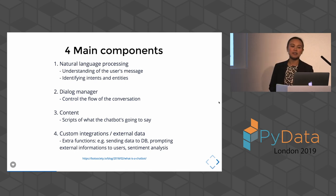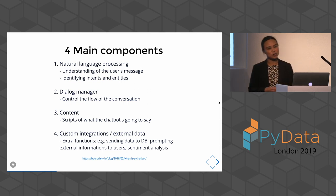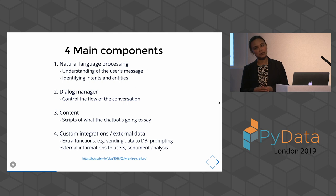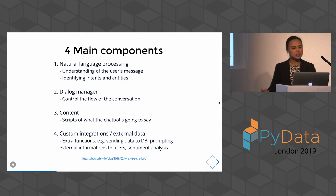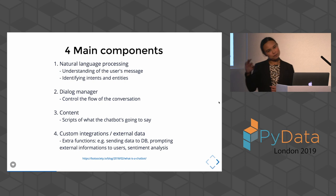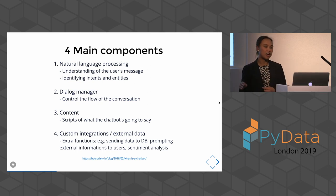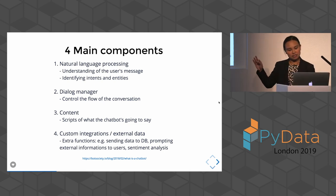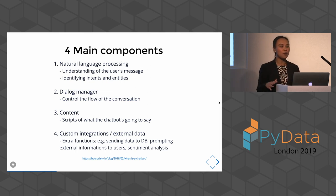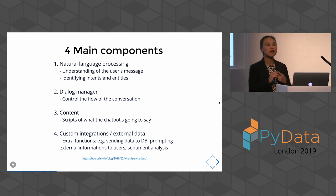According to a blog post, we have four main components. There's a natural language processing part — it's very important because your chatbot needs to be able to communicate with a human. You need to understand what the human is saying. This part is often not just called NLP — it's called NLU, natural language understanding. When the user types a message, the chatbot needs to know what you're talking about. For example, if you say 'hello,' the chatbot knows it's a greeting.